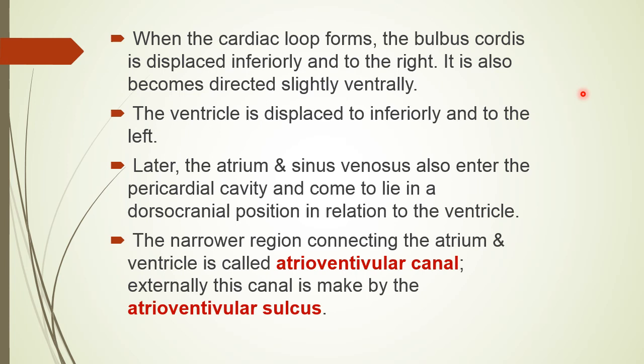When the U-shaped loop is formed, the bulbus cordis is displaced inferiorly to the right and slightly ventrally, while the ventricle is displaced inferiorly and to the left. In the beginning, the atrium and sinus venosus are lying in the septum transversum and are not present in the cavity of the pericardium, but later they are pulled out and come to lie in a dorsal cradle position in relation to the ventricle. The narrow region connecting the atrium and ventricle is externally indicated by a sulcus called the atrioventricular sulcus.